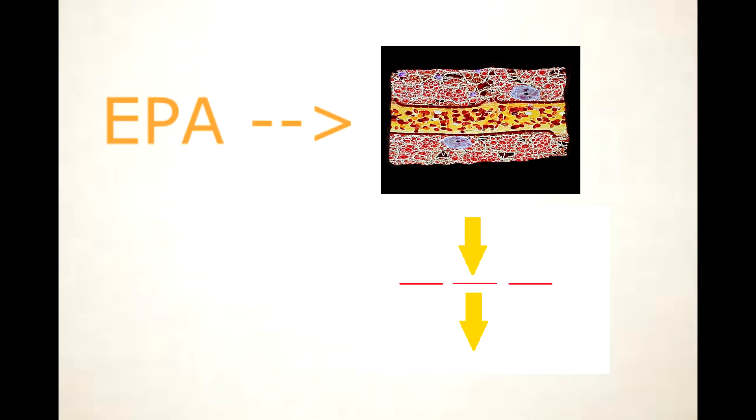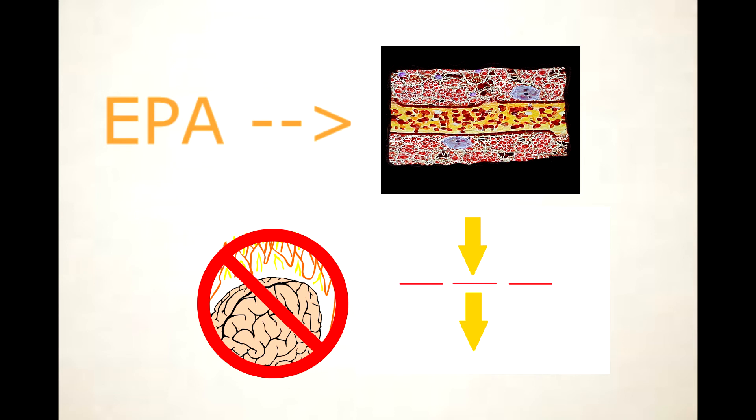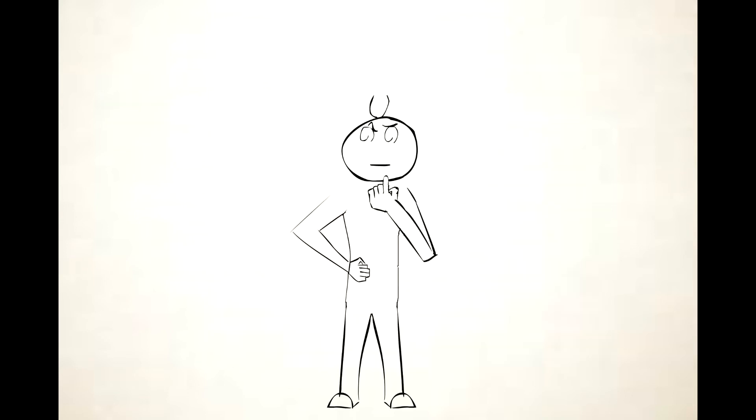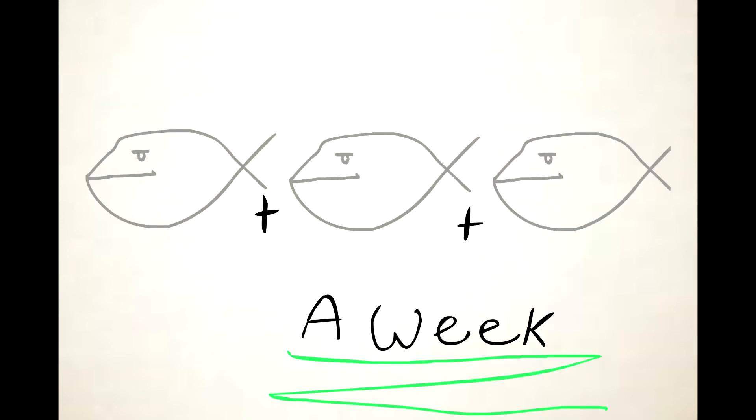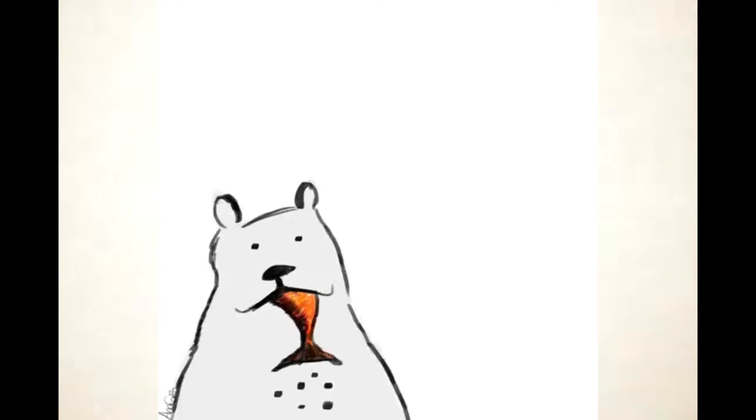So if we get EPA into the bloodstream, it can cross over to the brain and reduce the inflammation. But how much should we take? The ideal would be to eat fatty fish at least three times a week, if not more. Three times is the minimum, and that's a shift in my diet I really hope to make.